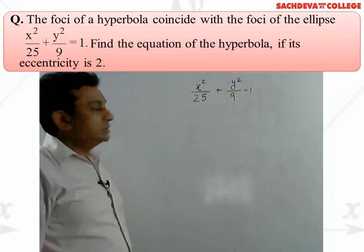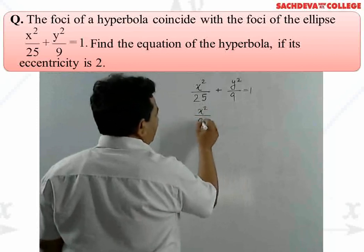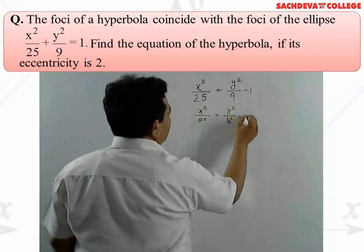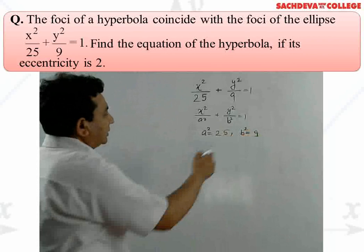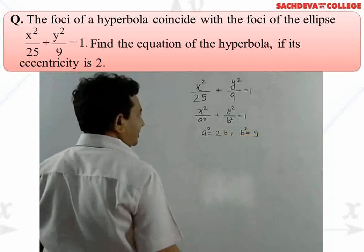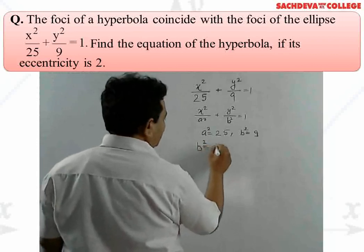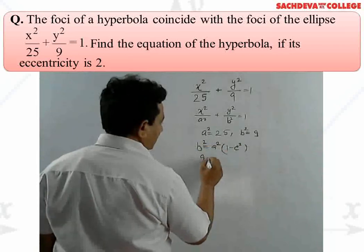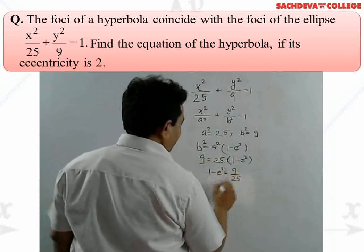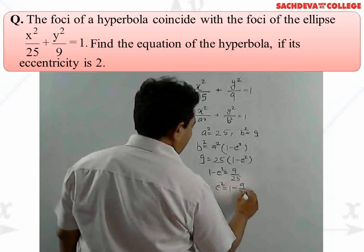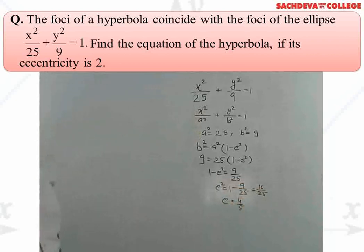Given that the foci of the hyperbola coincides with the foci of the ellipse, so first we find the foci of the ellipse. Comparing with x²/a² + y²/b² = 1, we get a² = 25 and b² = 9. Using the formula b² = a²(1 - e²): 9 = 25(1 - e²), so 1 - e² = 9/25, giving e² = 16/25 and e = 4/5. So 4/5 is the eccentricity of the ellipse.